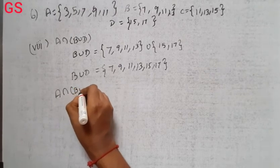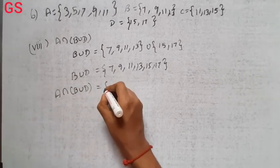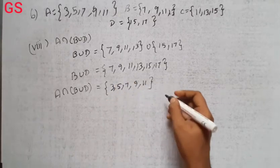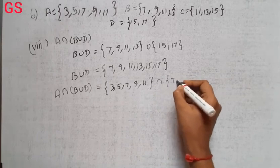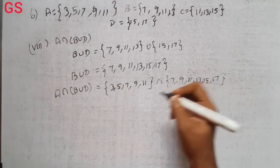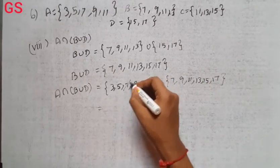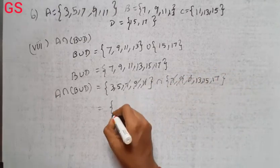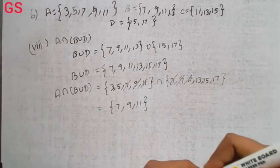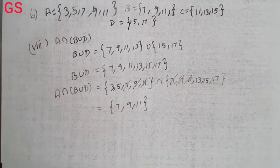A intersection B union D. A has 3, 5, 7, 9, 11. Intersection B union D has 7, 9, 11, 13, 15, 17. Common is 7, 9, 11.